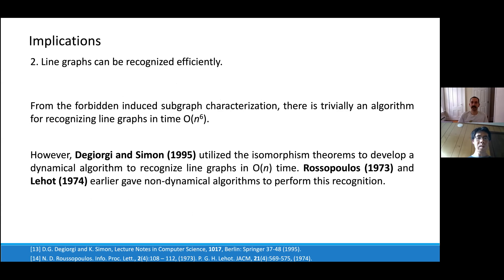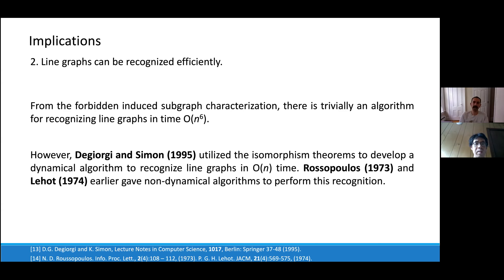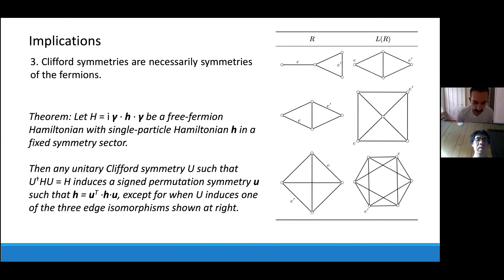Another implication: line graphs can be recognized efficiently. Given a Hamiltonian in terms of Pauli operators, you can immediately test whether this solution method applies. A naive O(n^6) algorithm enumerates all subgraphs on at most six nodes and checks if any are isomorphic to one of the nine forbidden subgraphs. There are much faster linear-time algorithms by Lehot, or Degiorgi and Simon, or Roussopoulos. So testing whether your model is a line graph is very fast.